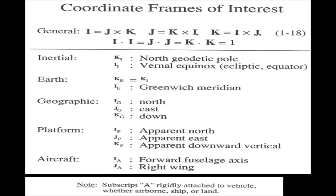Here are the five coordinate frames most important to us. All have reference directions I, J, K with magnitude 1, each perpendicular to the other two. For the inertial frame, we choose a z-axis along the earth's polar axis and the x-axis along the equator's intersection with the earth's orbital plane — called the ecliptic. The earth frame differs from inertial only by a z-axis rotation through the hour angle of the vernal equinox. From earth to geographic coordinates, we go through latitude and longitude. Platform frame is what the onboard computer thinks the geographic frame is, and from there to vehicle coordinates we go through heading, pitch, and roll angles.